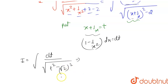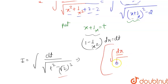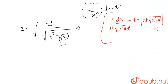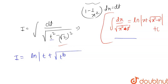To solve this integration, we know the standard result: ∫ dx / √(x² - a²) = ln|x + √(x² - a²)| + C. This is the standard result we know. So using this, I can write our integral I as ln of modulus of t plus under root of t² minus 2, plus C.